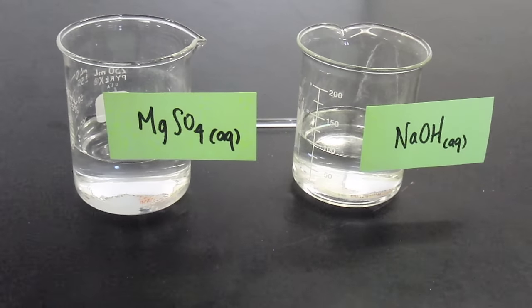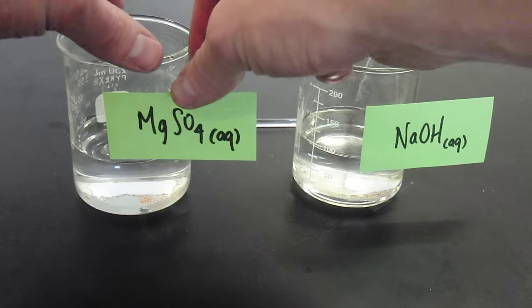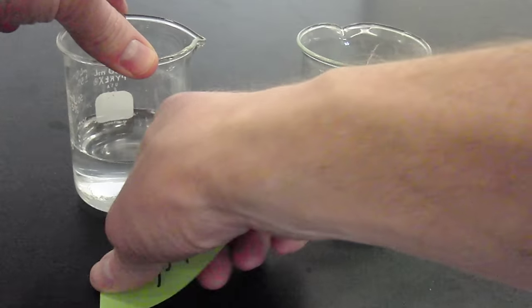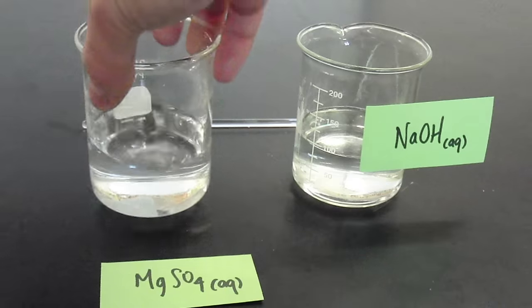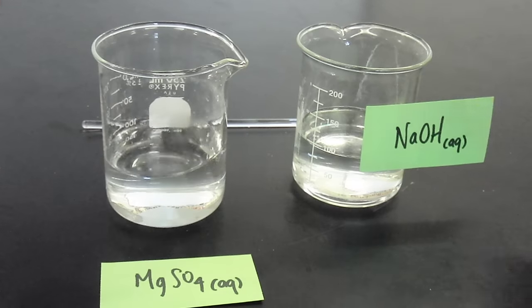What we have here are two beakers, each containing a dissolved aqueous ionic compound. In the beaker on the left, we've got magnesium sulfate, and you can see that is a clear and colorless solution. It looks just like water at first glance.